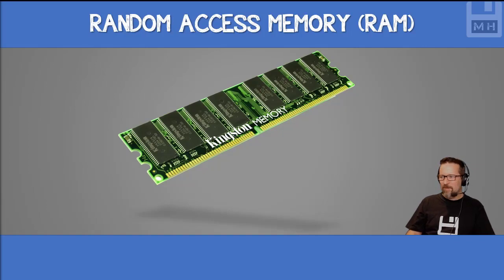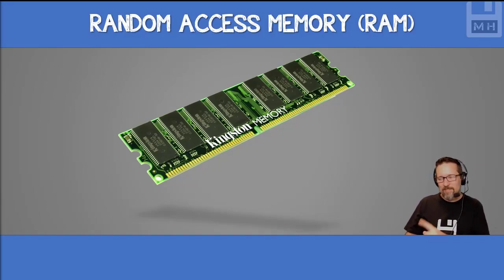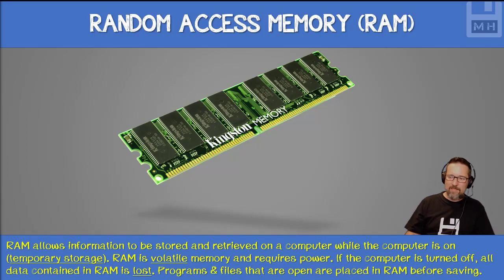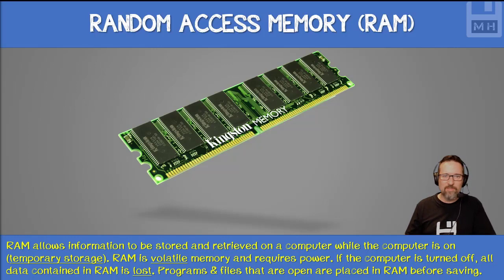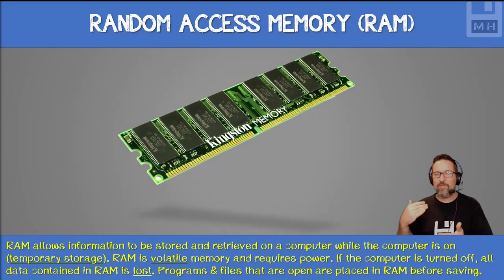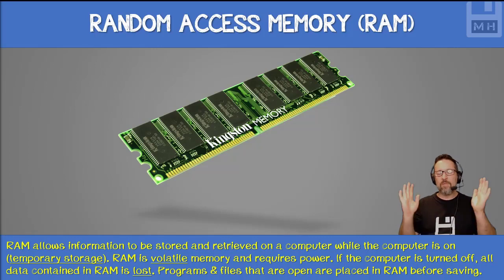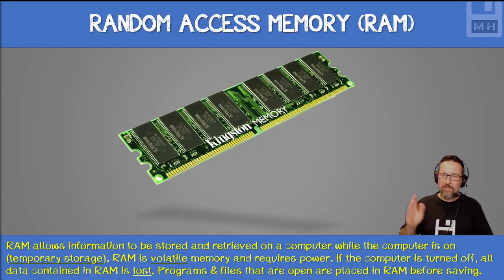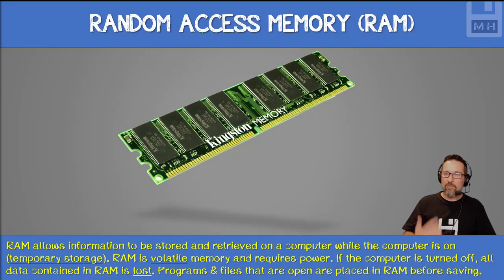RAM — there's a stick of RAM, a dual inline memory module. We also call it RAM, random access memory. RAM allows information to be stored and retrieved while the computer is on. This is temporary storage because if your computer gets hit by lightning — boom — everything is gone. RAM gets cleared. If you shut down your computer and didn't save your work, it's gone.